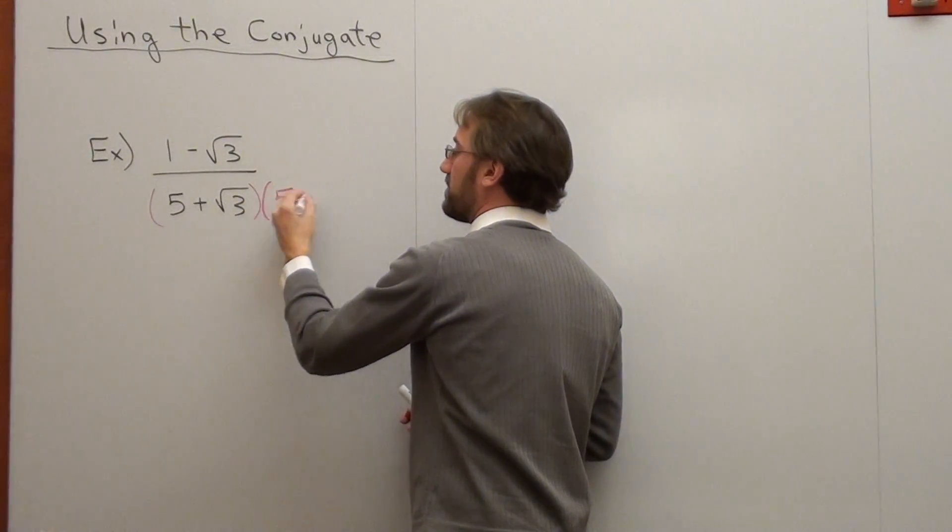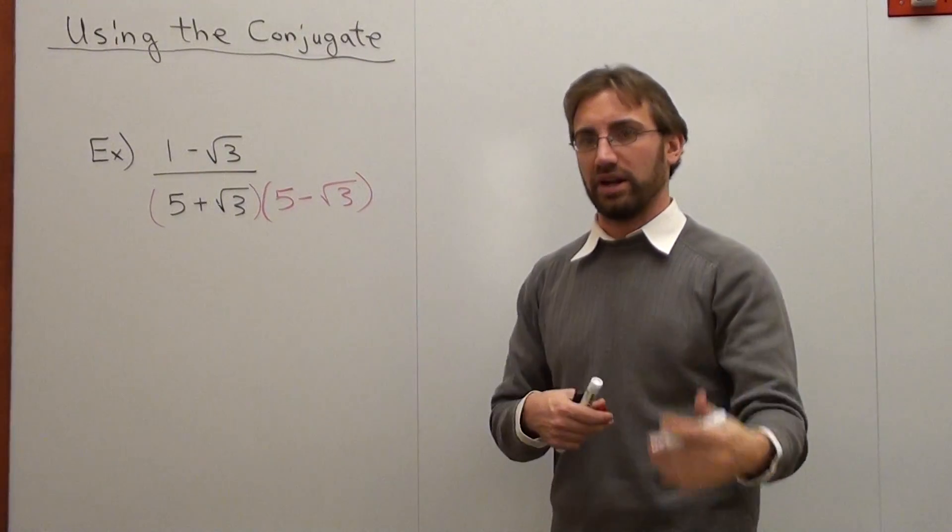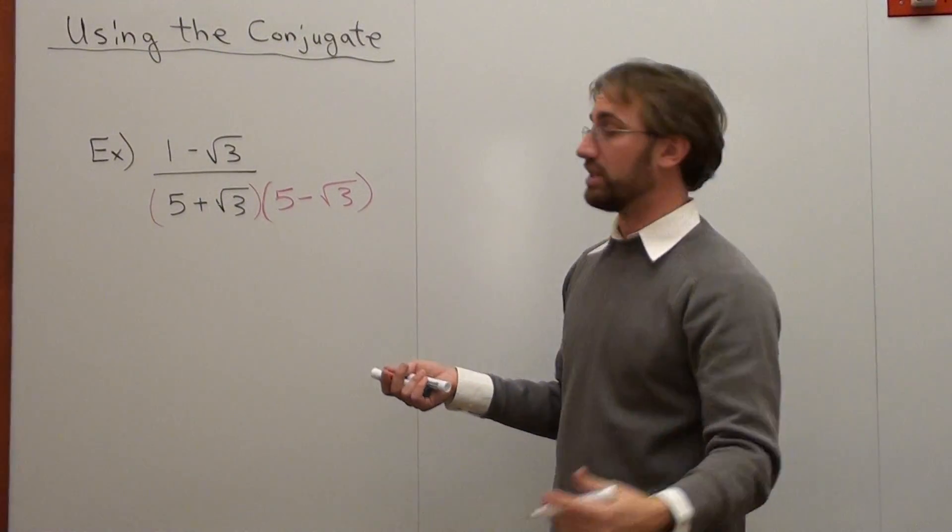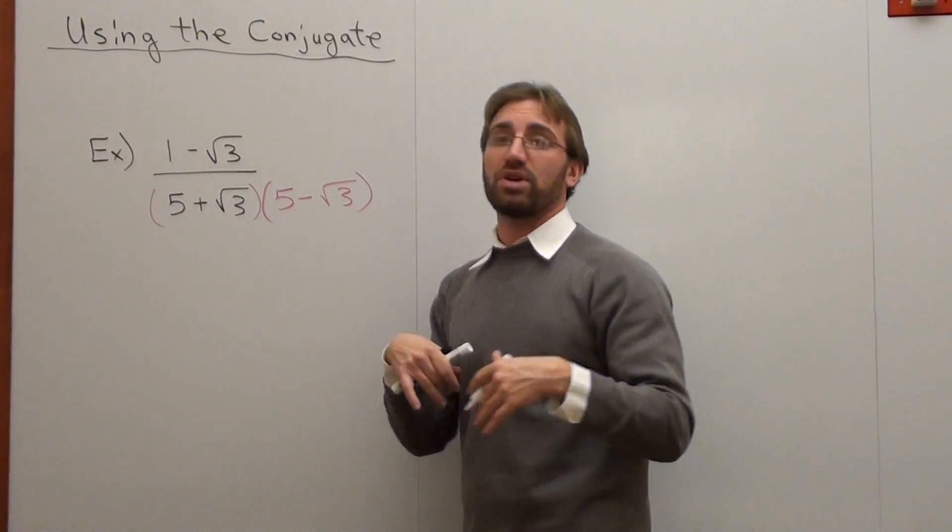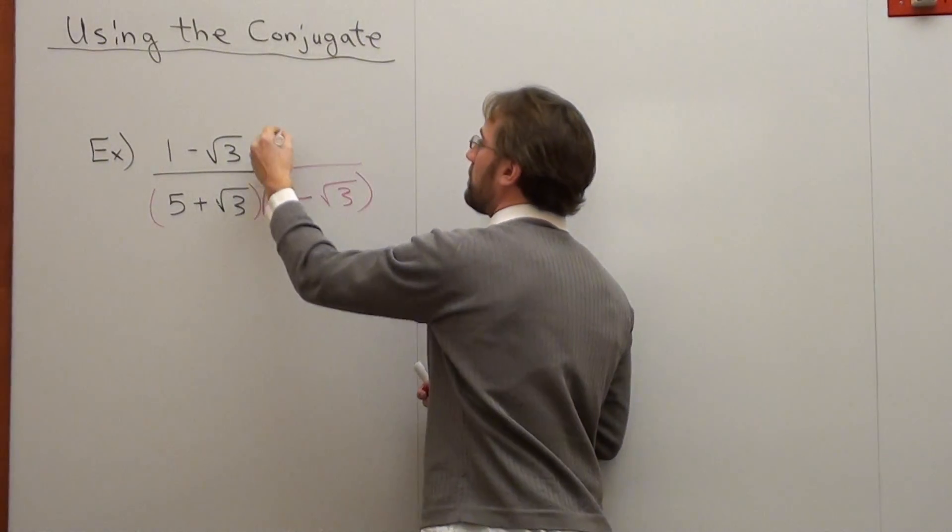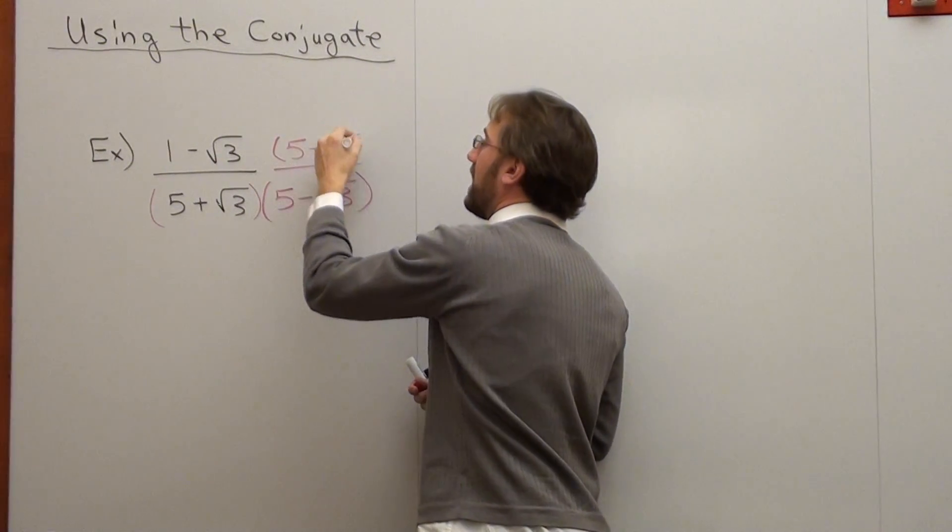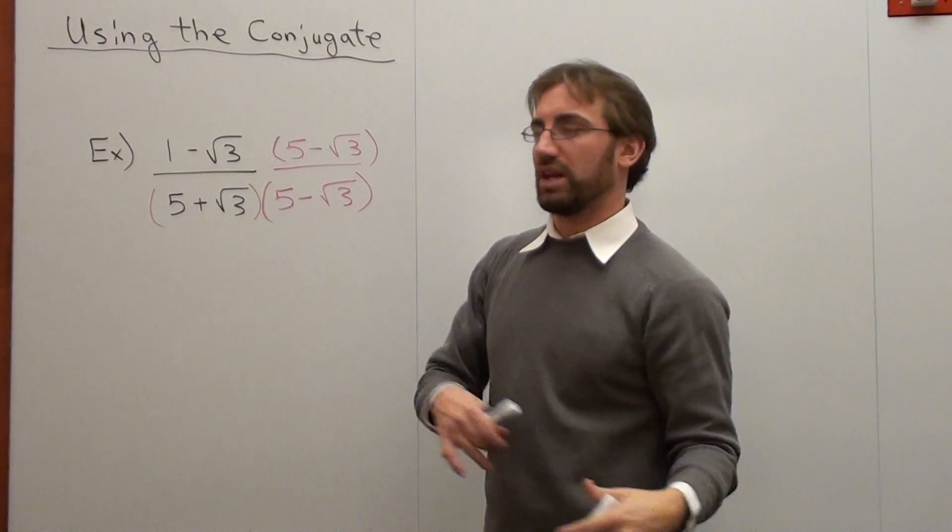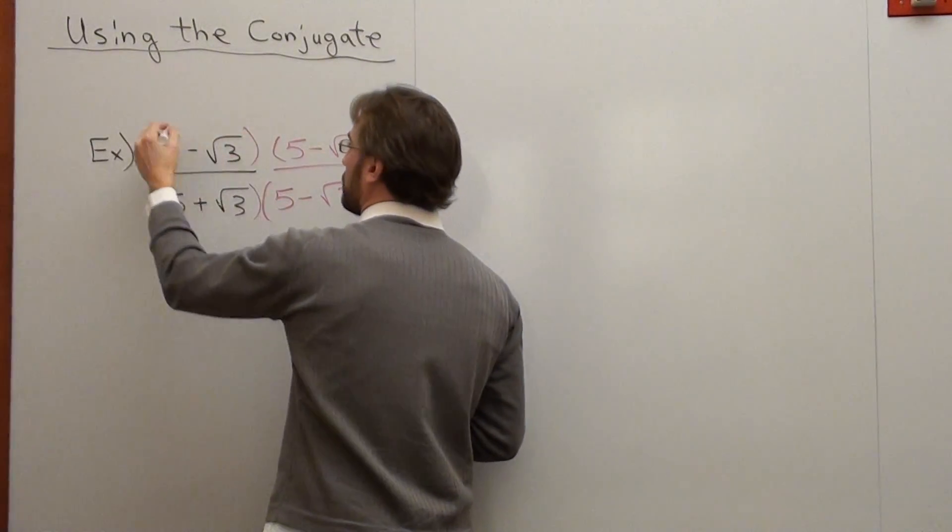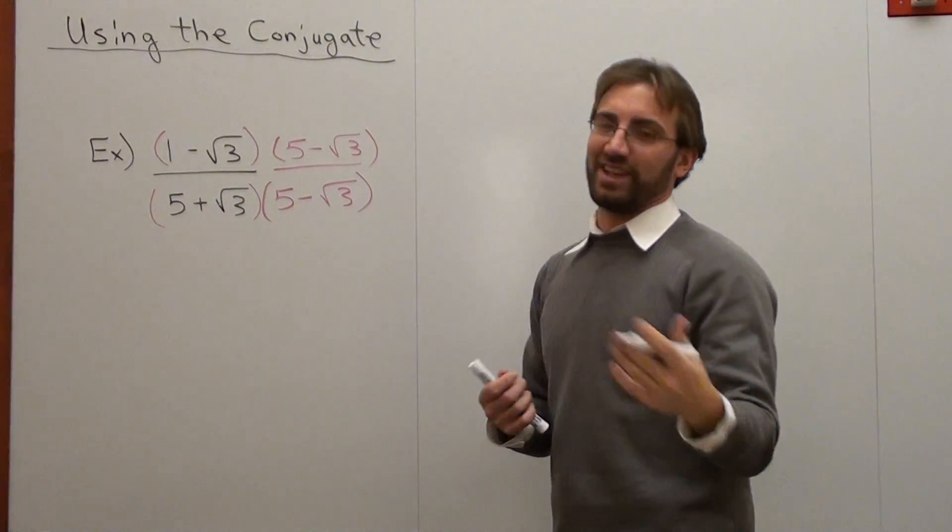So it's 5 subtract rad 3, or root 3, or radical 3, or square root 3, whatever you want to call it. But what I do on the bottom of an expression, I have to do on the top. So I have to do that here. Now, the denominator turns out to be quite pleasant. The numerator, not so much. Let's see how we do it, though.